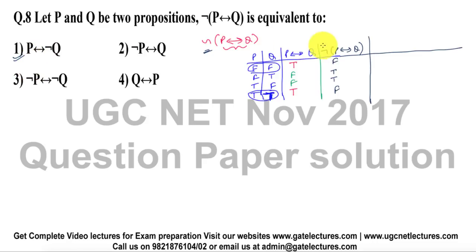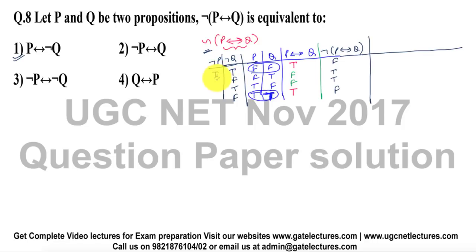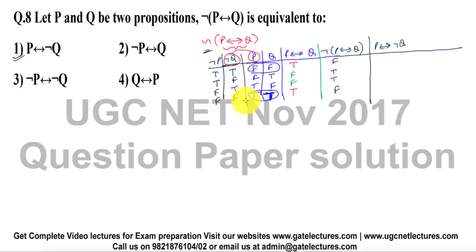Let us first find out what negation of P and negation of Q are. Negation of Q will be: true, false, true, false. When we say P double implies negation of Q, this double implication is true only if both values are the same. In these two particular cases both values are true, so in those two cases the result is true, otherwise false. So the first option matched.